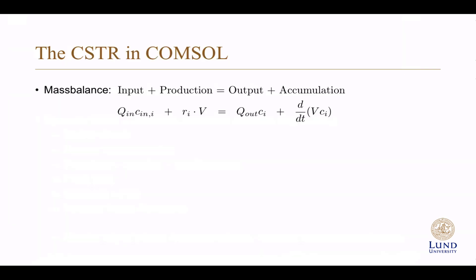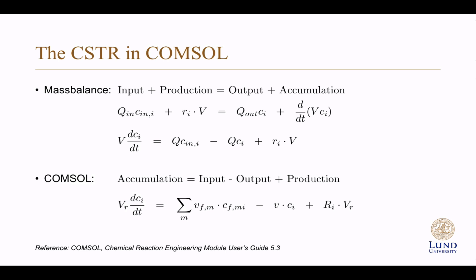In previous screencasts on CSTR, I've defined the mass balance as the input plus the production equals the output plus the accumulation. But if you assume constant volume, you can also write the equation like this, where the accumulation equals the input minus the output plus the production term, where the Q in equals the Q out. COMSOL implements the mass balance in a very similar way, but recognizes that there could be several input terms and uses capital R for the sum of the reaction rates for the reactions in which species I participate.